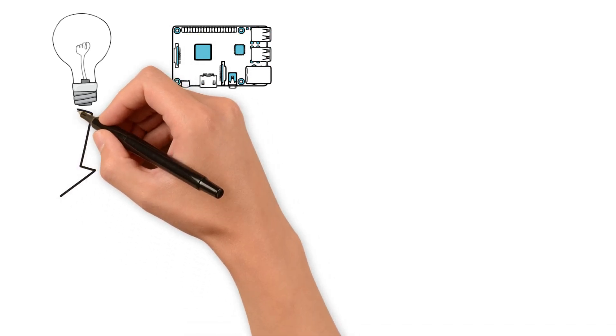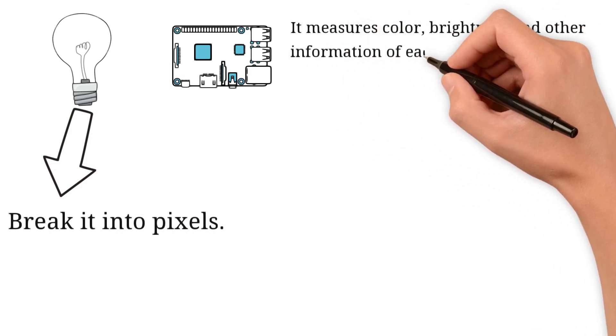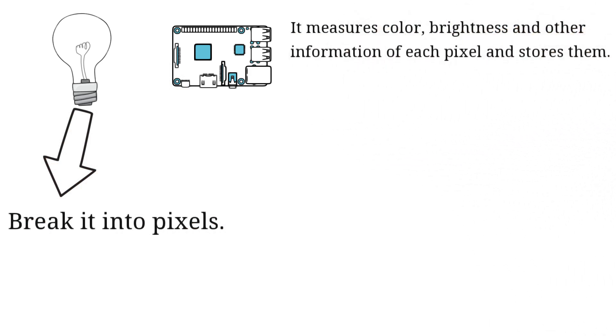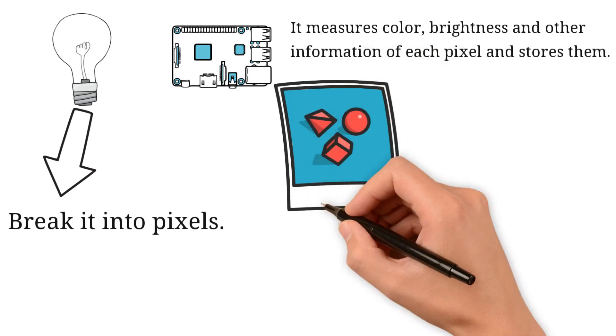The purpose of the sensor is to take that light and break it into pixels. It measures color, brightness, and other information of each pixel and stores them. This means that every photo you see is a collection of thousands, if not millions of pixels.